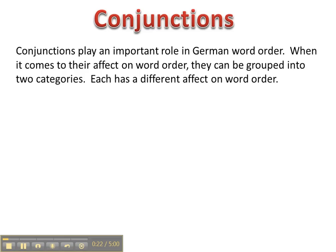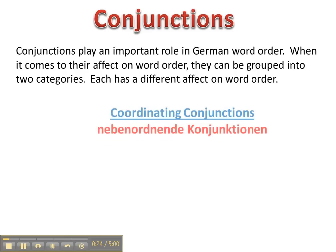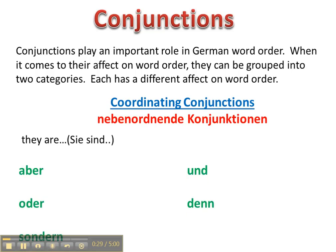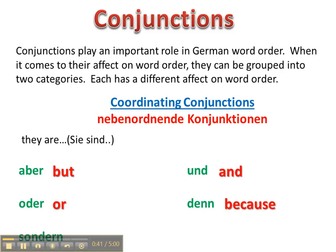Each category has a different effect on word order. The coordinating conjunctions — aber, oder, sondern, und, and den — do not affect the word order. So aber is 'but,' und is 'and,' oder is 'or,' den is 'because' (not to be confused with dan, which is 'than'), and sondern is 'but rather.'